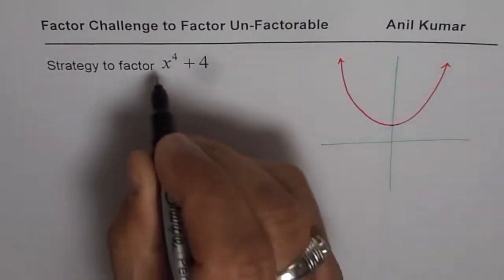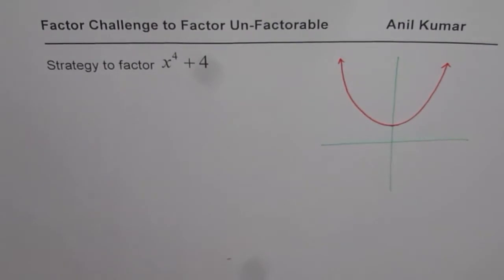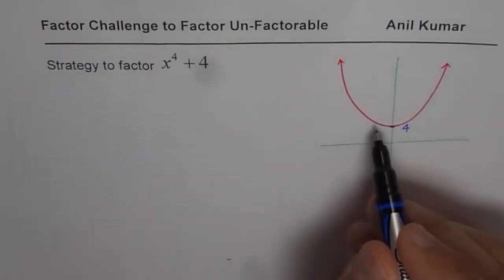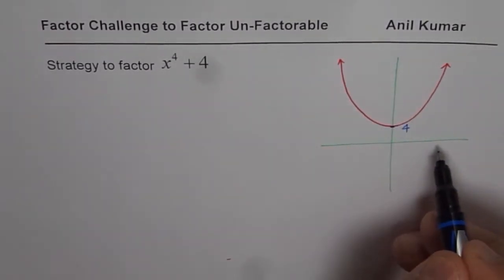Where at x equals to 0, the value will be 4. So let me write this 4 in a different thing. So this is 4 at this point. You can clearly see that there are no x-intercepts.